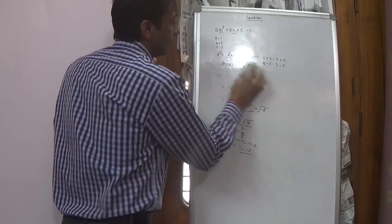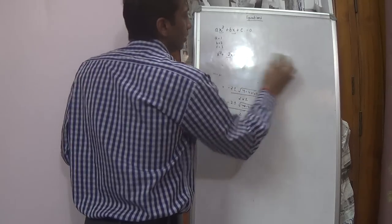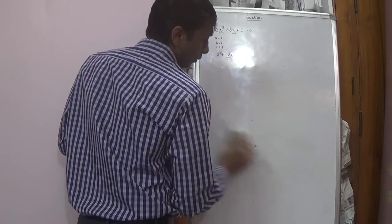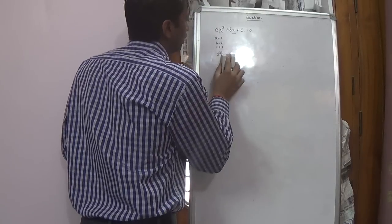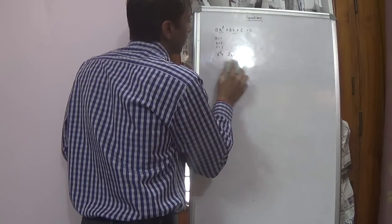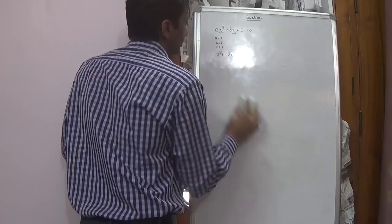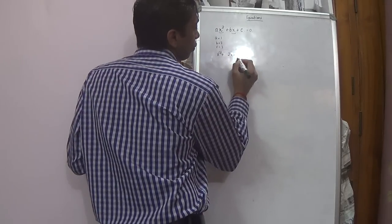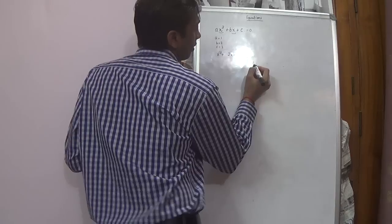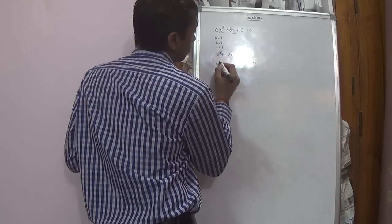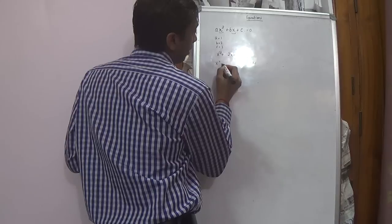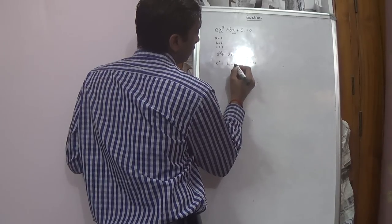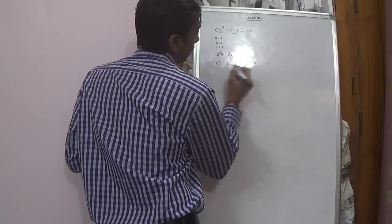This is the formula-driven method. Another method is factoring: when we know 2 is the sum of the factors and minus 3 is the multiplication of the factors, we try to find the factors. The factors could be minus 3 and 1.